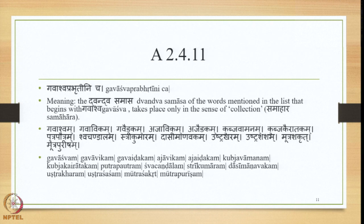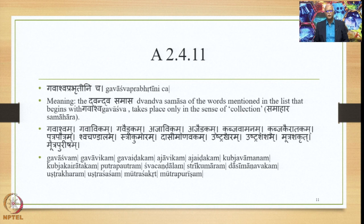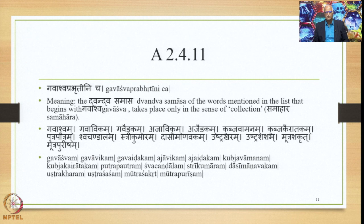We have studied in the previous lecture the Sutras from 2.4.2 onwards up to 2.4.10. Let us proceed further and study the Sutras beginning with 2.4.11 in this particular lecture. Sutra 2.4.11 is Gavashva Prabhritinicha, meaning that the Dvandhva Samasa of the words mentioned in the list beginning with Gavashva takes place only in the sense of collection. So this Samasa takes place only when the sense of collection is denoted and not in the sense of Itaretara Yoga.